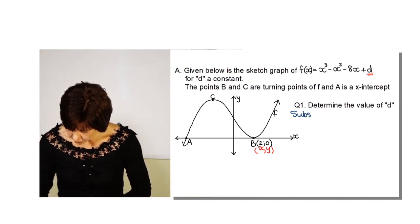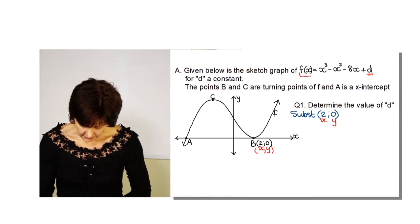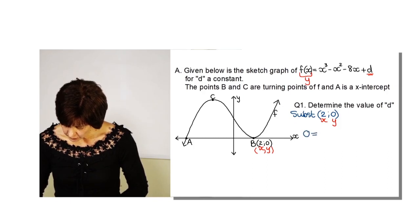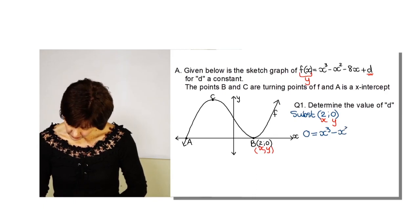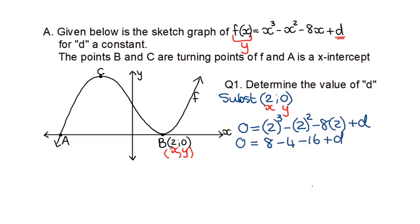I substitute the point (2, 0) into f(x), since it lies on the graph. Replacing y with 0 and every x with 2: 0 equals 8 minus 4 minus 16 plus D. So 8 minus 4 is 4, and 4 minus 16 is negative 12 plus D equals 0, which gives D equals 12.